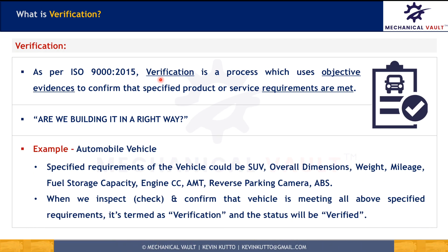Let's take another example — an automobile vehicle. We have many requirements to meet: whether the vehicle is SUV, hatchback, or sedan; overall dimensions; weight; mileage; fuel storage capacity; engine capacity; transmission type; reverse parking camera; and anti-lock braking system. All these are requirements of that particular vehicle. Before dispatching this product to customers, we confirm whether our product meets those requirements — QA engineers do inspection and confirm that.